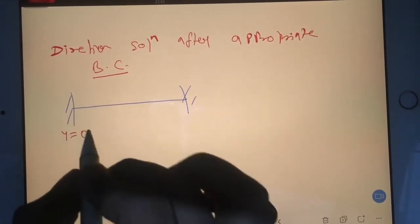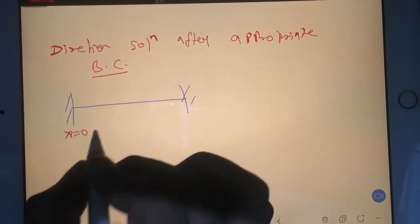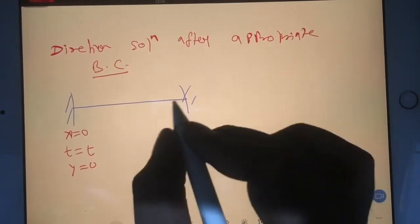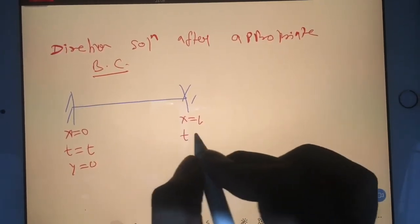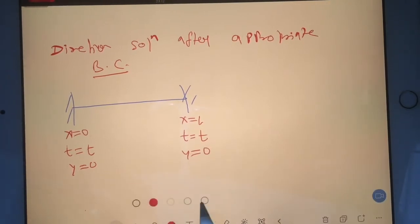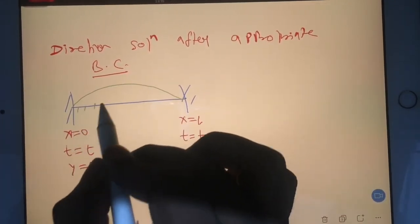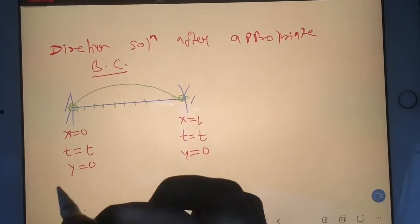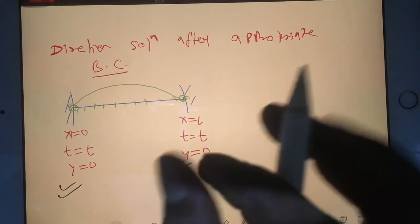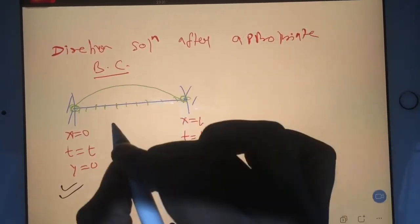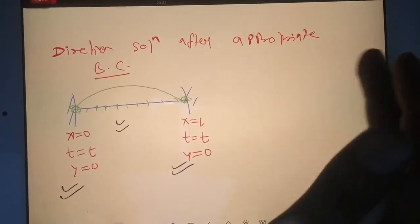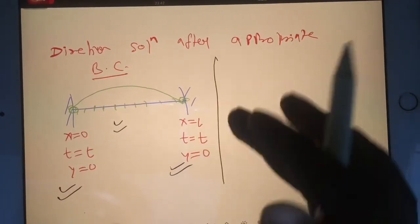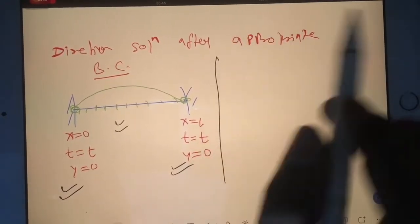At x equals zero and t equals any time, your y displacement will be zero. At x equals L and t equals any time, your y displacement is again zero. You have displacement only in the remaining part of the beam. At the extreme points you don't have displacement, so these particles are not vibrating. These become our boundary conditions. You have to smartly choose boundary condition - it will vary beam to beam. We have fixed-fixed, fixed-free, free-free. In all cases you'll have separate boundary conditions.